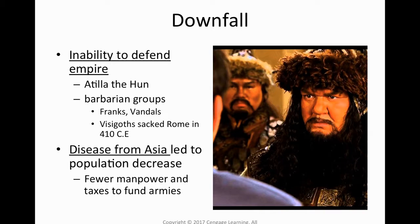The Roman Empire didn't last forever, mostly because of disease. One problem with these roads is that they also brought disease from Asia. As time went on, populations decreased and you had fewer men fighting in armies and fewer taxes to raise. As a result of that military weakening, the Romans eventually became unable to defend their empire. One of the famous barbaric leaders who came in from the east was Attila the Hun — if you've ever seen Night at the Museum. These barbaric groups were also known as the Huns, the Franks, the Vandals, and even the Visigoths.